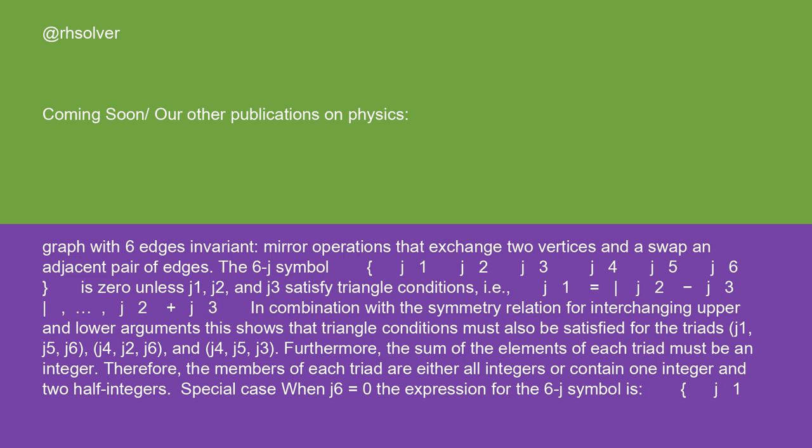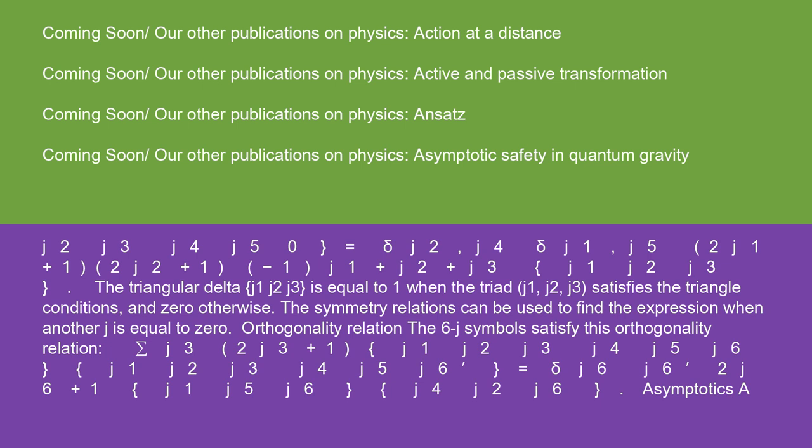Special case: When J6 equals zero, the expression for the 6J symbol is J1, J2, J3, J4, J5, 0 equals delta J2 J4, delta J1 J5 over the square root of 2J1 plus 1 times 2J2 plus 1, times minus 1 to the power J1 plus J2 plus J3, times the triangle coefficient for J1, J2, J3. The triangular delta J1, J2, J3 is equal to 1 when the triad J1, J2, J3 satisfies the triangle conditions and zero otherwise.